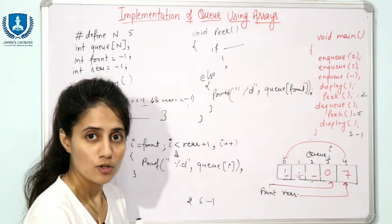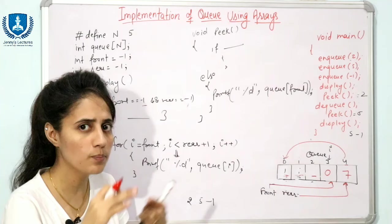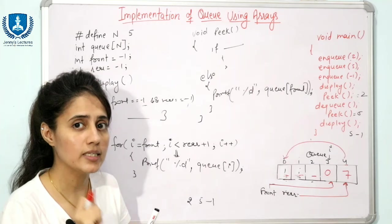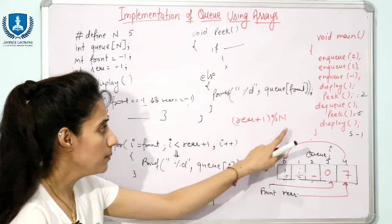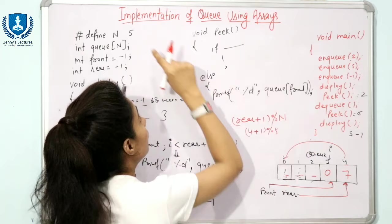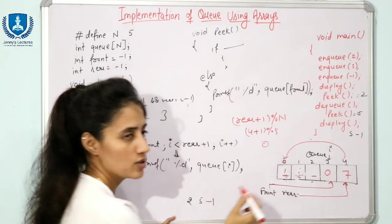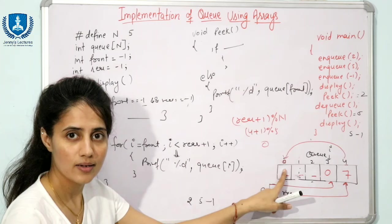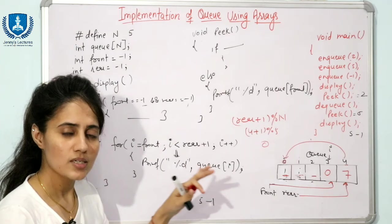To overcome this, we use a circular queue. Instead of rear++, we use rear = (rear + 1) % N. When rear is 4: (4 + 1) % 5 = 0, so rear wraps back to 0 and we can insert there. Similarly, front = (front + 1) % N. We will discuss circular queues in detail in a future video — this is just an overview.